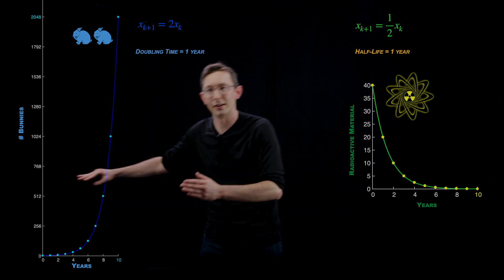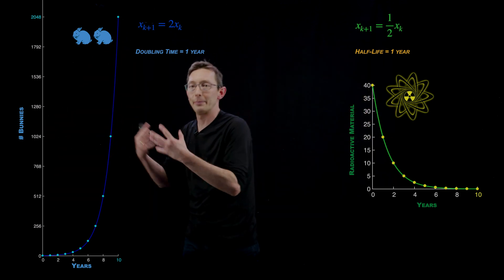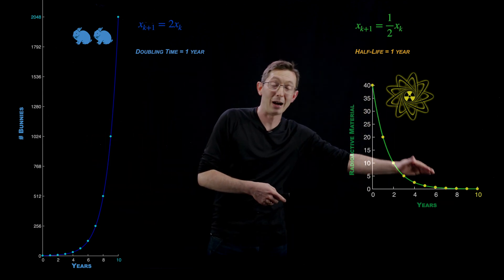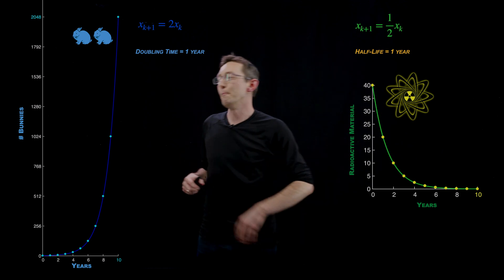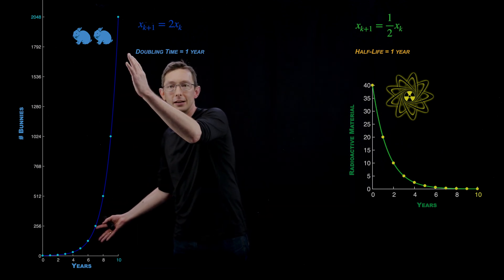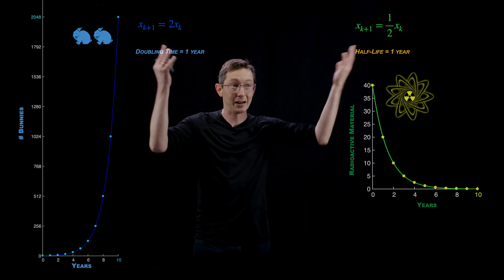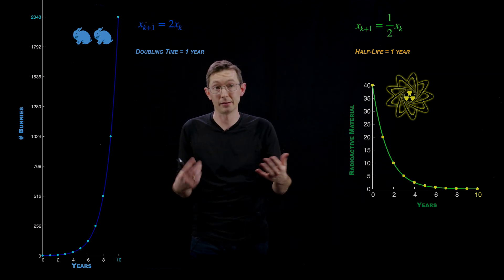So there are two extremes. You can have exponential growth where your population doubles. You can have exponential decay where your population halves. Most of my examples I'm going to talk about this kind of growth. But it's really the same mathematical equation just with a different constant from year to year.